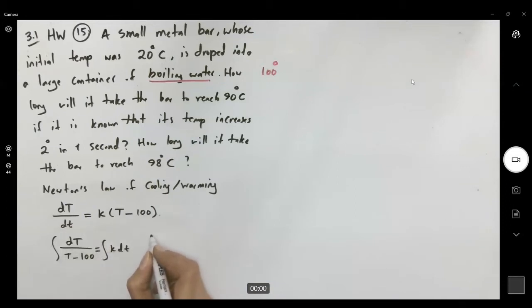We have ln of absolute value of t minus 100 equals to kt plus c, or t minus 100 is equal to e to kt times c. So the general solution t becomes 100 plus c e to kt.